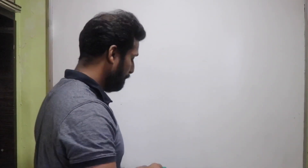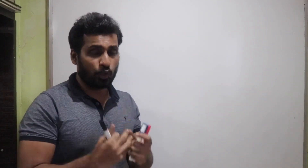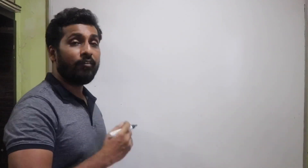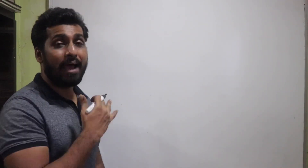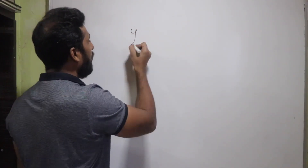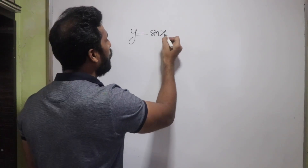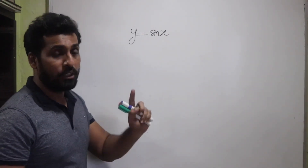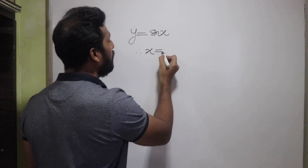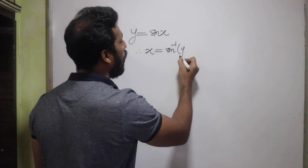There are six trigonometric functions: sin x, cos x, tan x, cot x, sec x, and cosec x. The six trigonometric functions will have six corresponding inverse trigonometric functions. For instance, if y = sin x is a trigonometric function, then x can be written as sin⁻¹ of y.